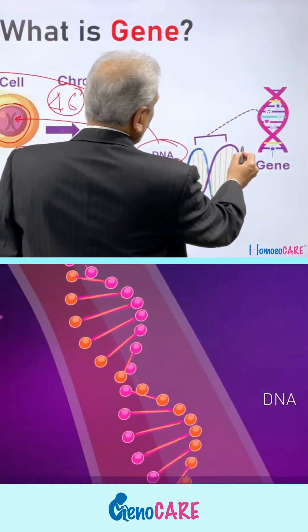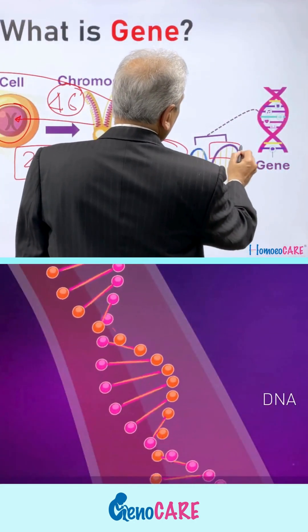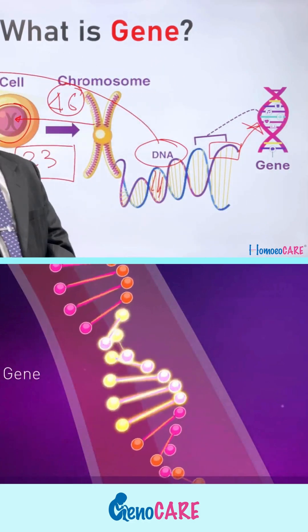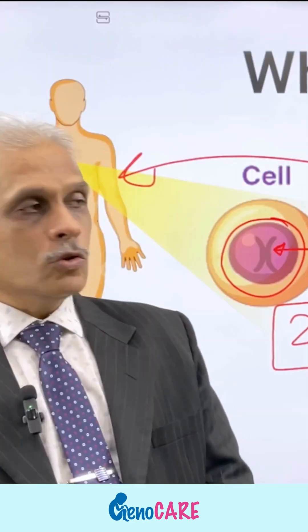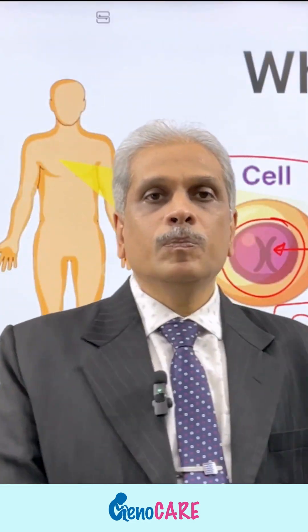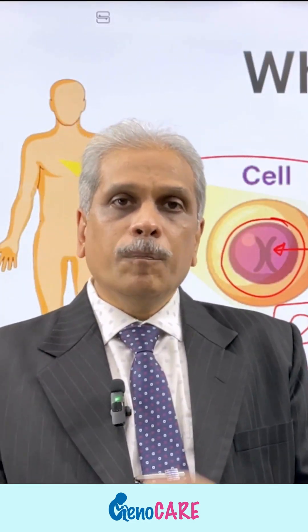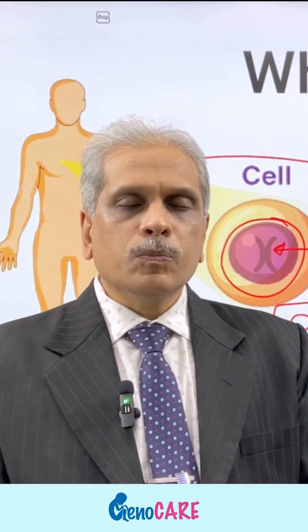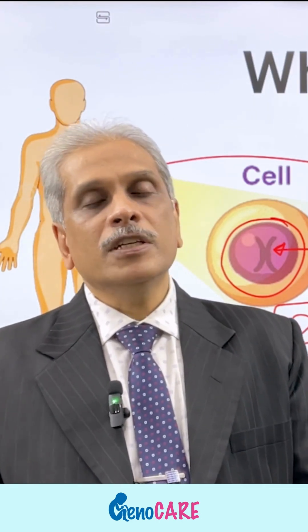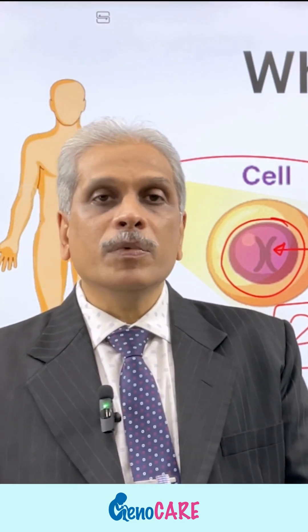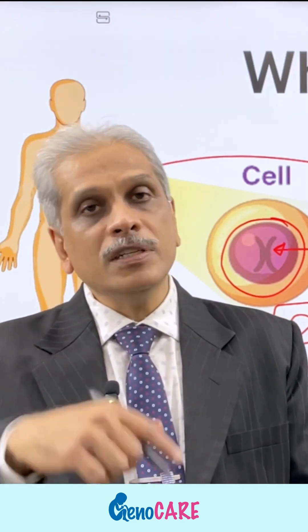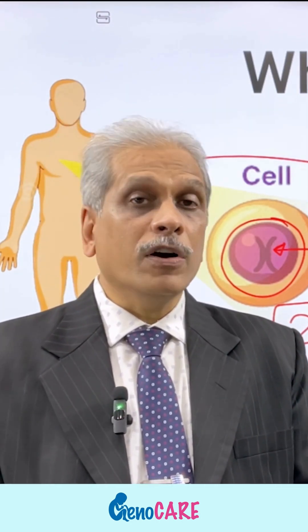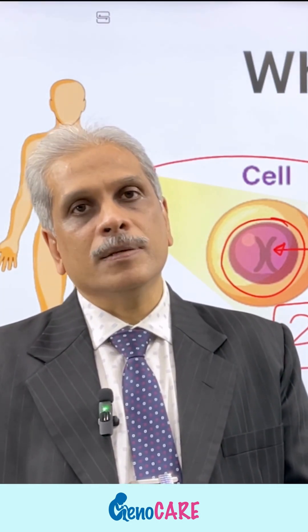When you take a segment of DNA, it is called a gene. A gene is basically a part of DNA which is responsible for functioning — responsible for the formation of protein, which in turn helps for the proper functioning of the organism.